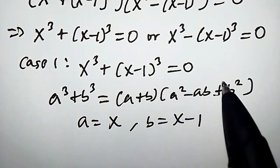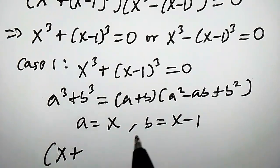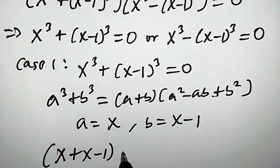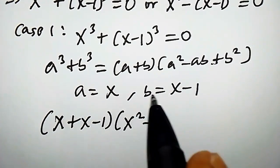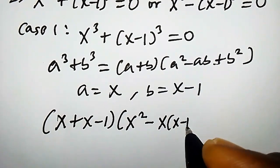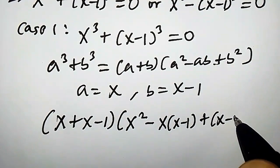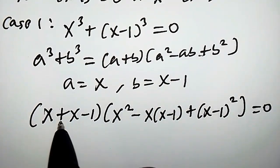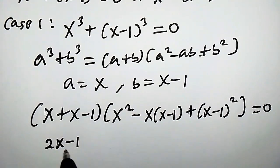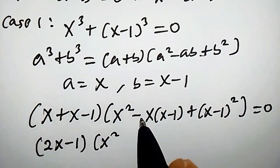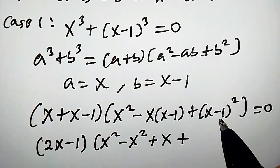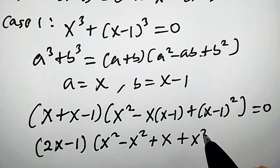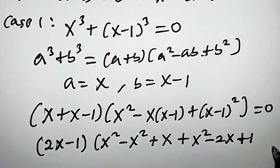Plugging the values of a and b into the right hand side, we get: x plus x minus 1, times x squared minus x times x minus 1, plus x minus 1 squared, equals 0. Expanding, that is 2x minus 1, times x squared minus x squared plus x plus x squared minus 2x plus 1, equals 0.